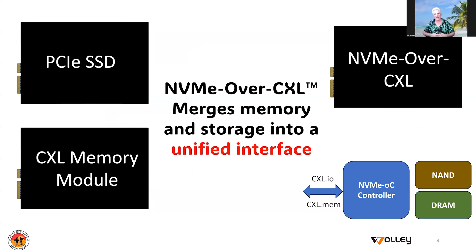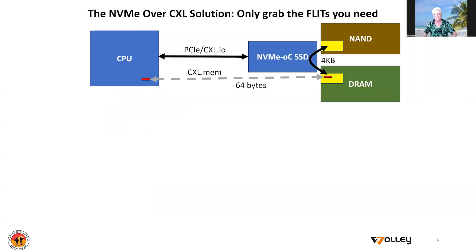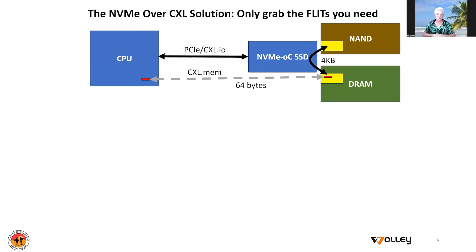So this is what we're looking at. NVMe over CXL takes NAND and DRAM, puts them behind a common interface, and makes it appear to the system as one resource. This doesn't seem too dramatic at first, but I'm going to show you that it's a lot more significant than you might initially give it credit for. Here's what the picture looks like: you have a common controller, and you address it using the CXL.IO protocol when you want to do NVMe functions.